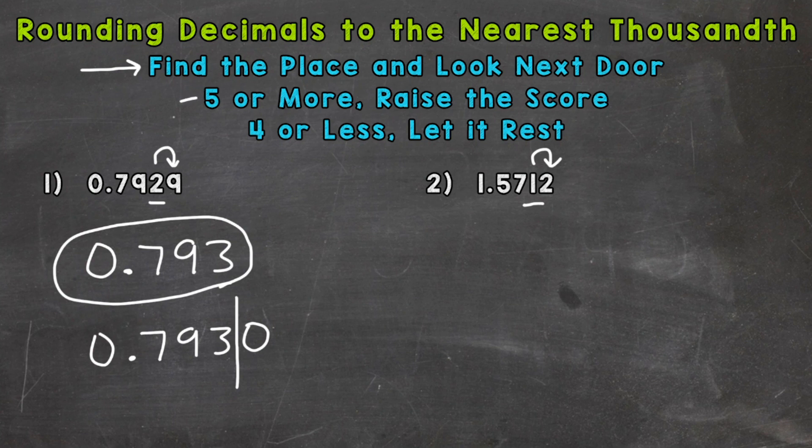Is that five or more raise the score or four or less let it rest? Well that 2 is four or less so we let that 1 rest and our rounded answer is going to be 1.571. Again we cut that decimal off at the thousandths. We don't need to have a zero to the right there. You cut it off at the rounded place.